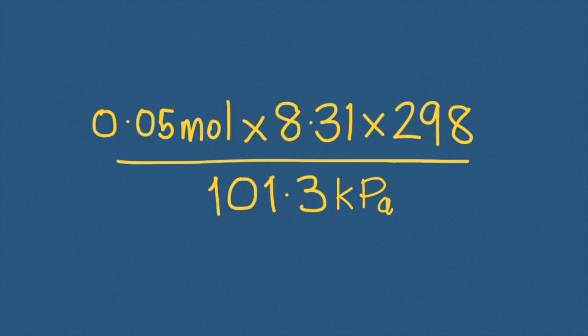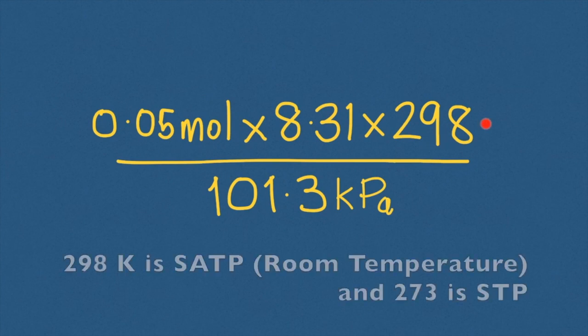In solving for V, we would have to place the expected number of moles of carbon dioxide, which is going to be 0.05 in keeping with the balanced equation and the 1:1:1 ratio, times 8.31 joules per Kelvin mole, which is the gas constant, times 298, which is standard temperature, divided by 101.3 kilopascals, standard pressure.